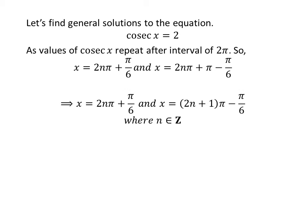Further simplification gives us the general solutions are 2 times n times pi plus pi upon 6 and 2 times n plus 1 times pi minus pi upon 6.